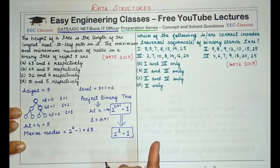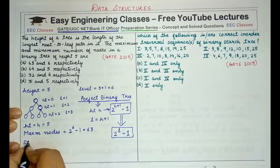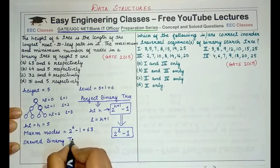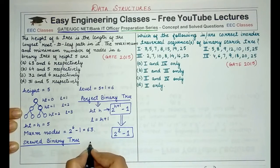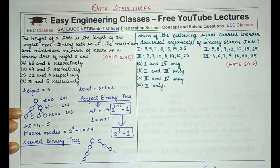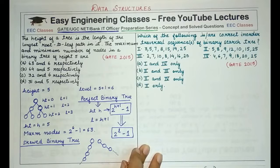The maximum number of nodes is possible in case of a perfect binary tree. The minimum number of nodes is possible in case of a skewed binary tree, which can be either left skewed or right skewed. In a skewed tree, all nodes are either towards the left hand side or towards the right hand side. In this case, the total height is a direct indication of the number of nodes, since each level is filled with a single node.